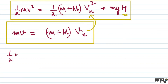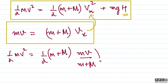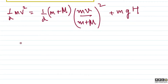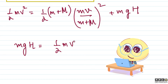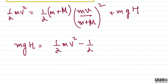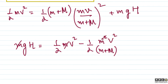So we have: ½mv² = ½(m + M) × [mv/(m + M)]² + mgh. Substituting vx = mv/(m + M) and squaring: ½mv² = ½(m + M) × m²v²/(m + M)² + mgh, which simplifies to ½mv² = ½m²v²/(m + M) + mgh. We can see that one factor of m cancels throughout.